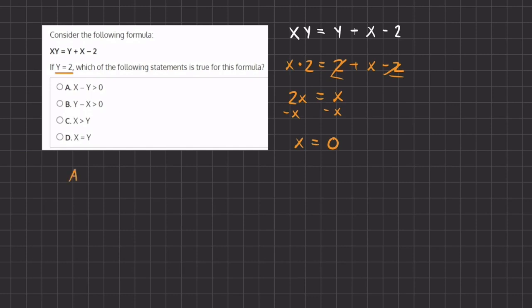Now let's take a look at our options. We have A, which states x minus y is greater than 0. So x is 0 minus y, which is 2, is greater than 0. If we simplify, we have negative 2 is greater than 0, which is an incorrect statement, and therefore A is incorrect.